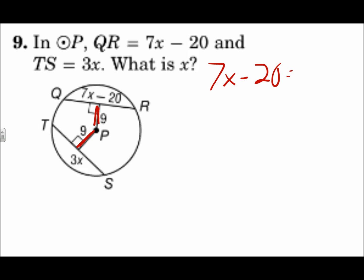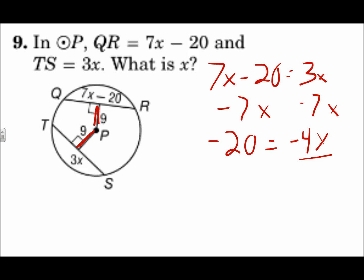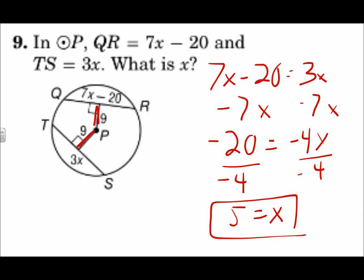Since the chords are congruent: 7x minus 20 equals 3x. Solving for x — subtract 7x from each side, giving negative 20 equals negative 4x, then divide by negative 4 — x is 5. Remember: when the distance from the center is the same, then the chords are the same.